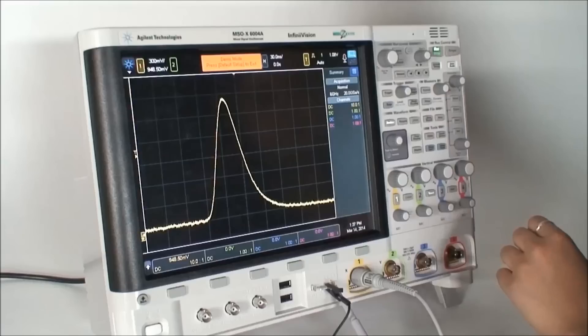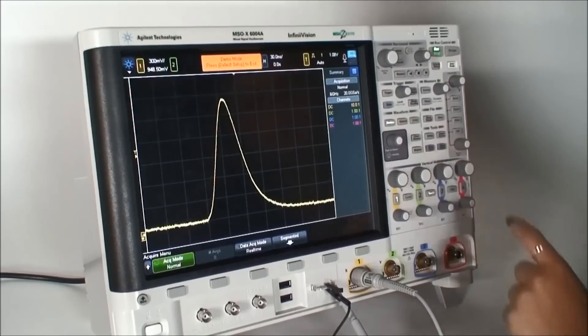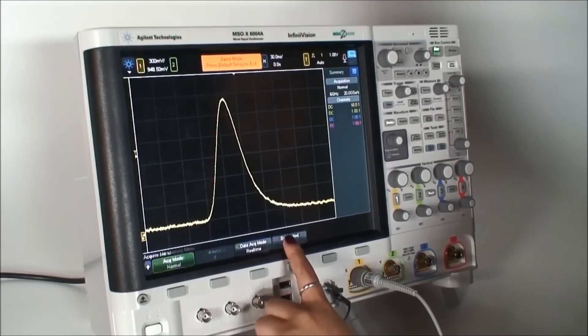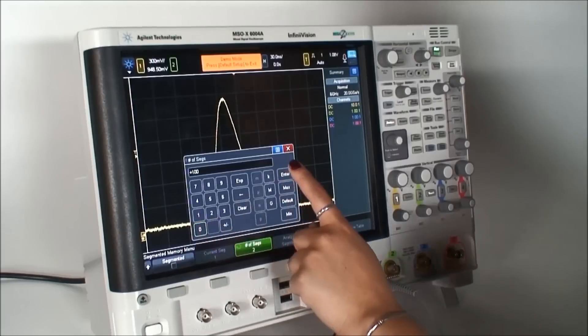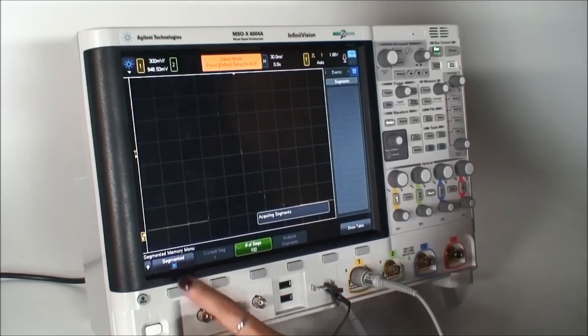Segmented memory can selectively capture multiple occurrences of the glitch at a high sample rate. This could be challenging using traditional deep memory acquisition. Let's set up the scope to capture 100 consecutive occurrences of the glitch. Press acquire, select segmented, and we can enter 100 segments using the on-screen keyboard. And now turn on segmented.